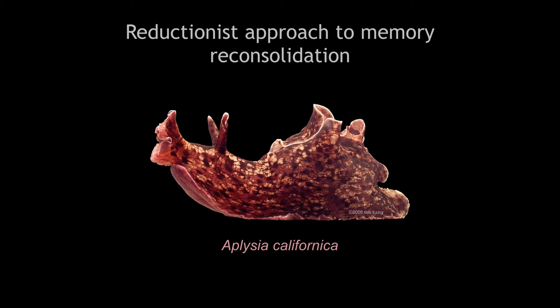We wanted to address whether this really happens, but we didn't want to work in mammals — too complicated, too many neurons, too many synapses. So we chose a simpler animal: this is a marine snail, Aplysia californica. It lives in the ocean off Malibu, so it's not that stupid — it gets free rent and all the seaweed it can eat.